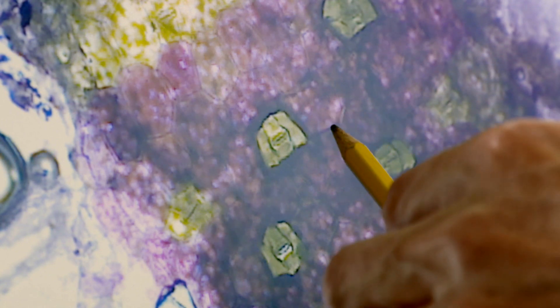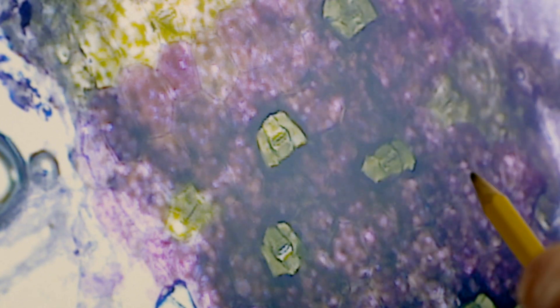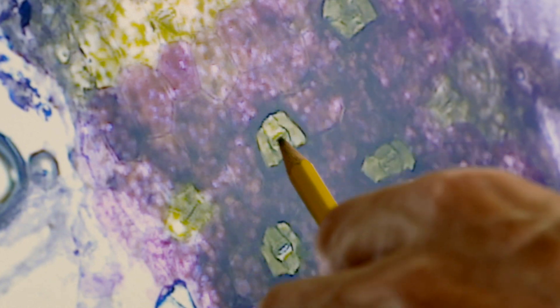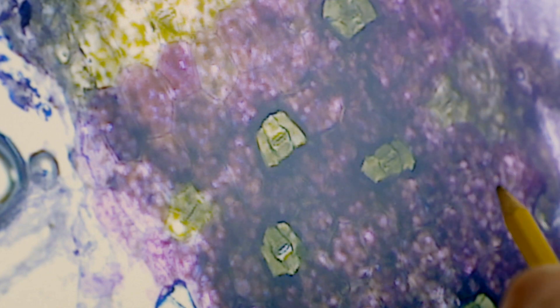Through there, through those openings, through the estomas, water vapor also comes out. The estomas are constituted by these cells that are here, which are called células anexas.